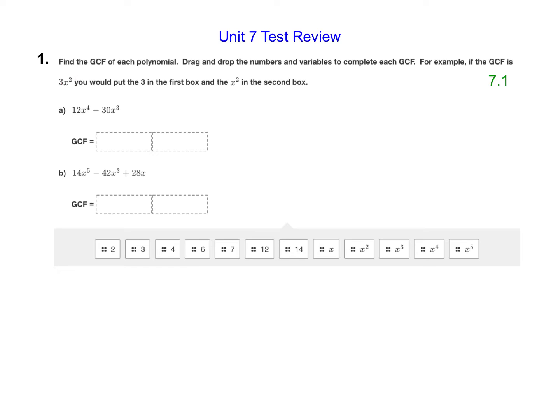So we want to find the GCF of each polynomial and then drag and drop the numbers and variables to complete each GCF. For example, if the GCF was 3x², we'd put a 3 in the first box and an x² in the second box.